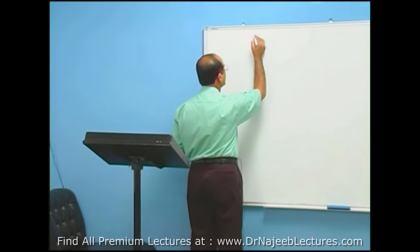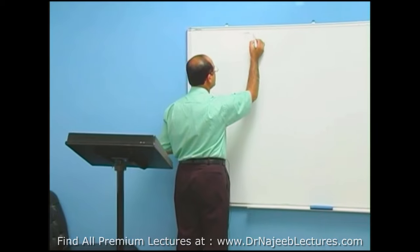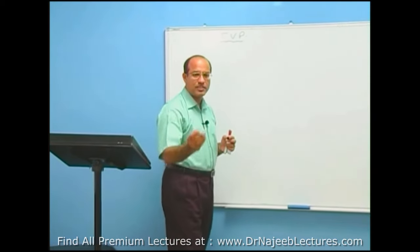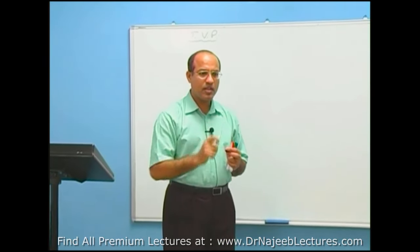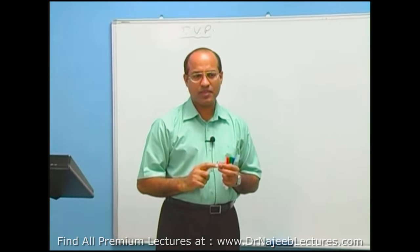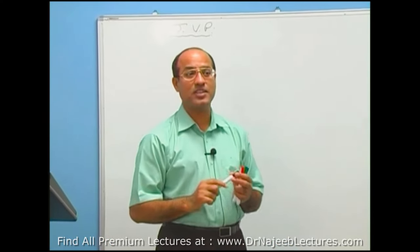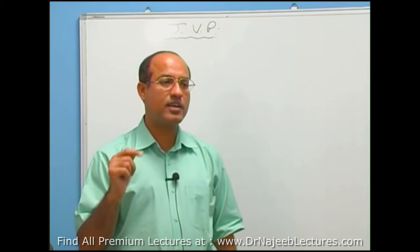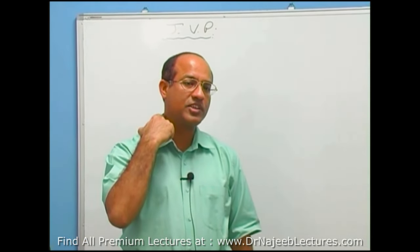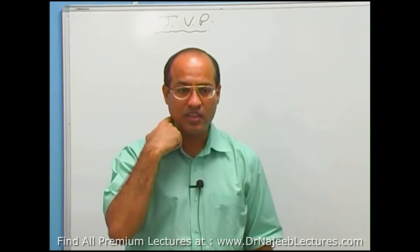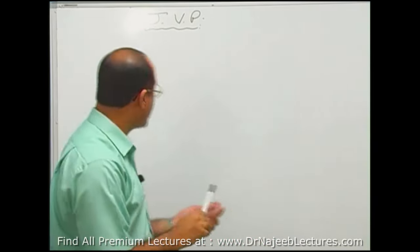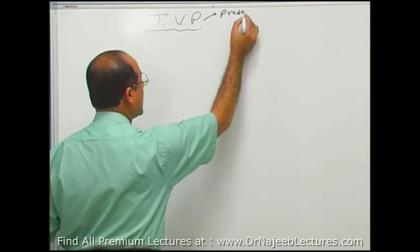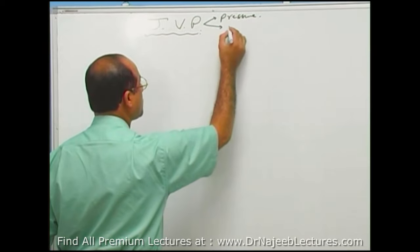We will be discussing JVP. JVP stands for jugular venous - both pulse and pressure. When we say check the JVP of a patient, we are supposed to see what the pressure is in the jugular system and what the pulse formation or waveform is in the jugular system. It stands for jugular venous pressure as well as jugular venous pulsations.